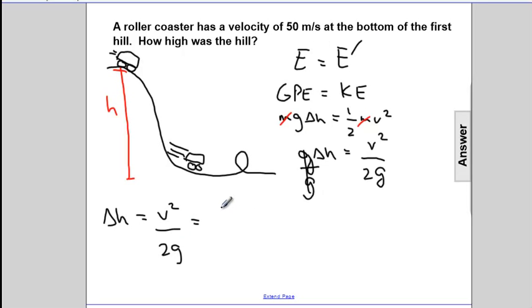So delta H is V squared divided by 2G. And in the problem, we're given that the velocity at the bottom is 50 meters per second.